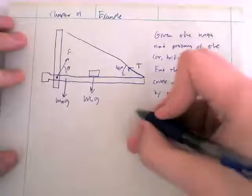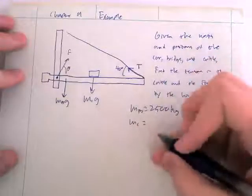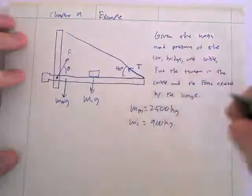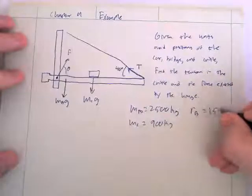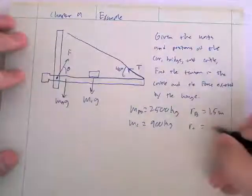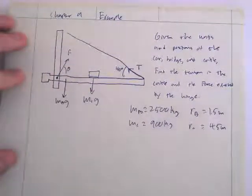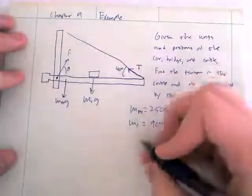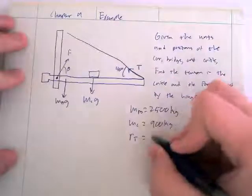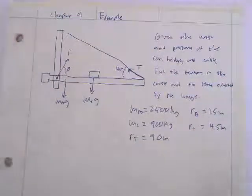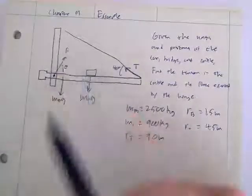Let's start putting numbers to some of these. The mass of the bridge is 2,500 kilograms. The mass of the car is 900 kilograms. The distance to the center of mass of the bridge, R sub B, is 1.5 meters. The distance to the car is 4.5 meters. The distance to the very end of the bridge where the cable is attached, R sub T, is 9 meters. We know everything there is to know about the bridge and the car. What we want to find is T, F, and the angle — everything about the force from the hinge.